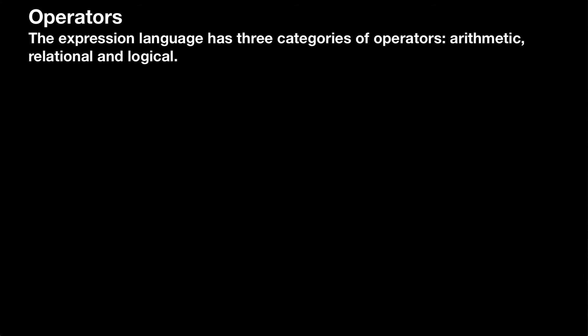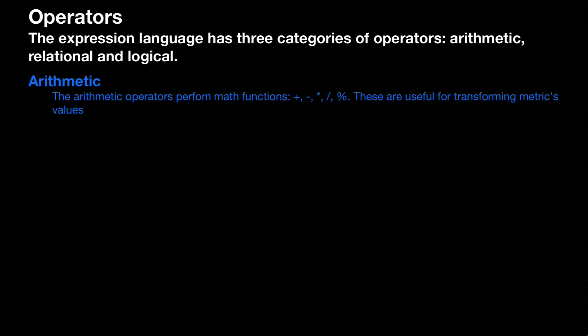Another way besides functions to manipulate our data is operators. The expression language has three categories of operators: arithmetic, relational, and logical. The arithmetic operators perform math functions such as addition, subtraction, and multiplication. These are useful for transforming metric values.